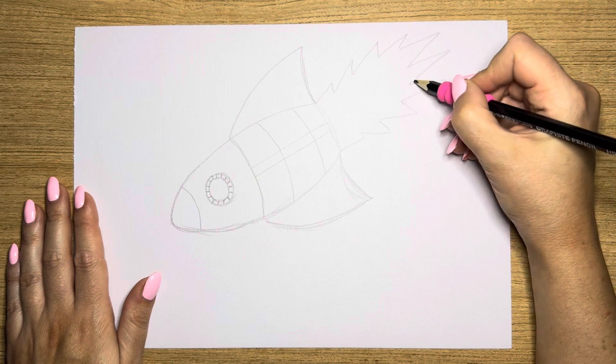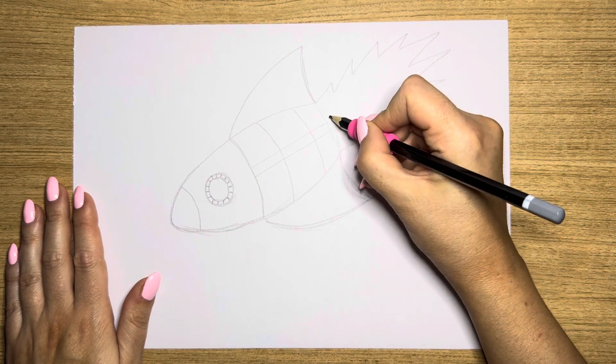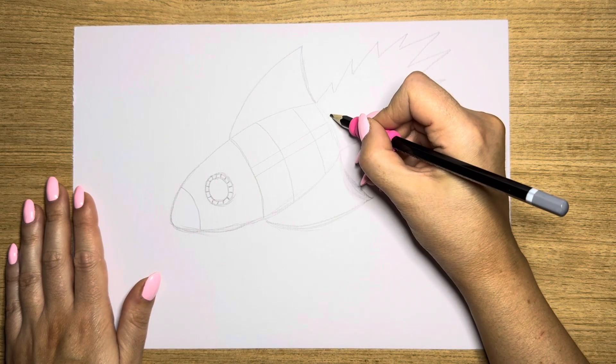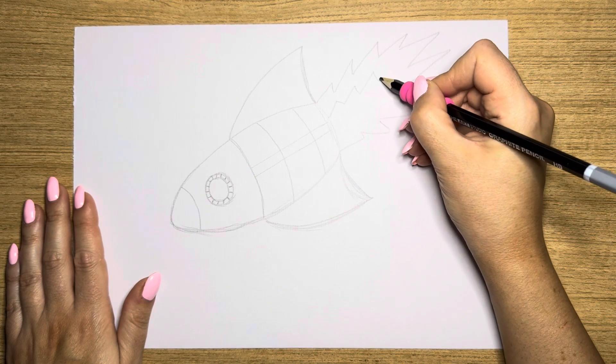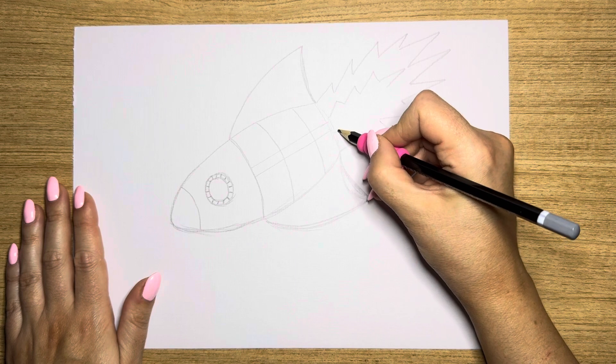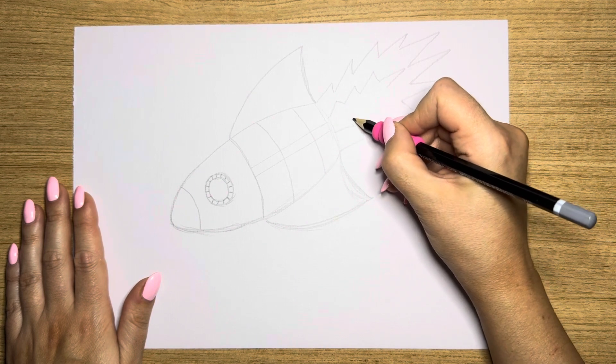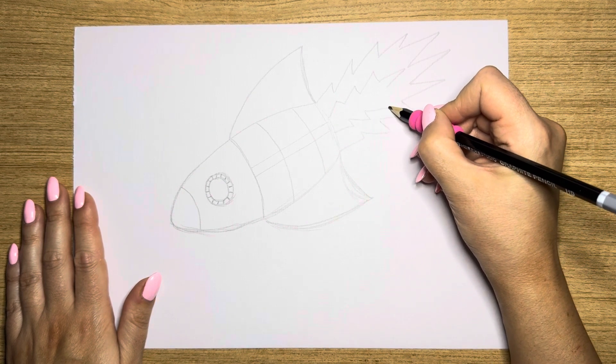And then I'll do the inside bit because this bit's going to be yellow and then the inside is going to be red and orange. So do some more zigzag lines. Make it look as interesting as you can. Zigzag, zigzag. Fabulous.